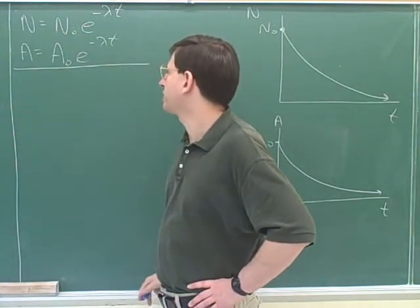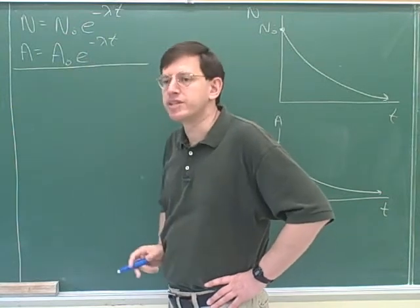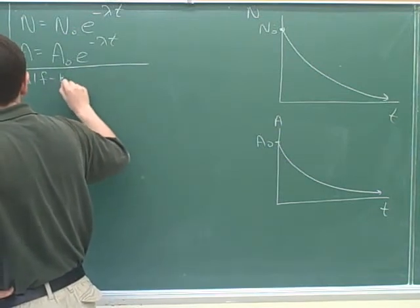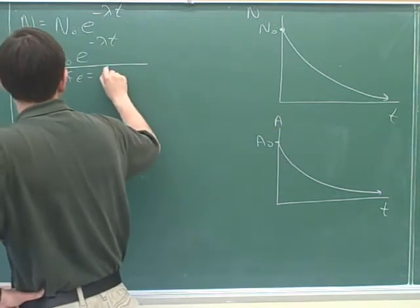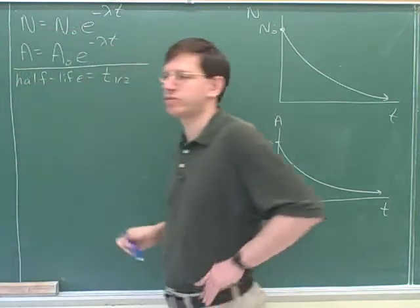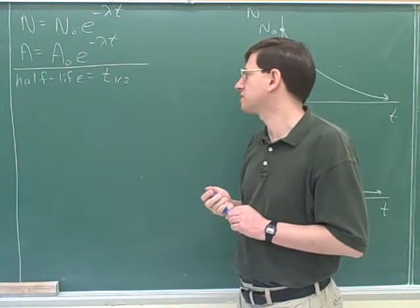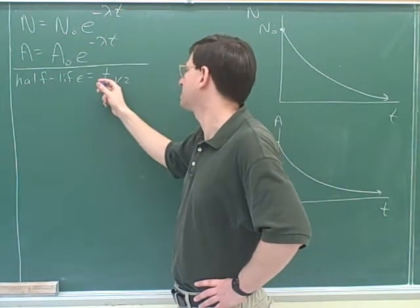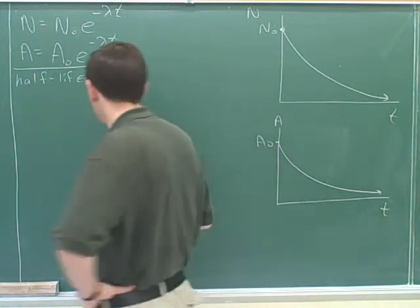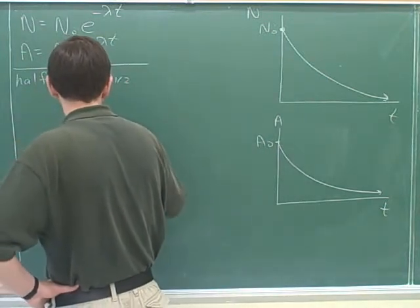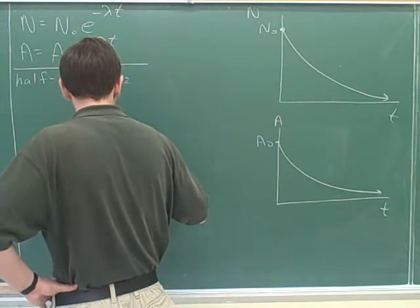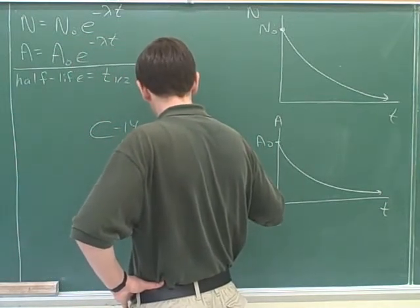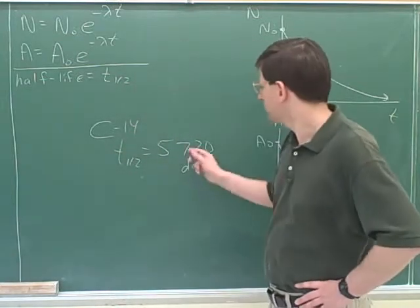Now sometimes when we're talking about how radioactive something is, we talk about its lambda. But sometimes instead we talk about its half-life. The symbol for half-life is T to the subscript one-half. This is just the symbol for half-life. So you don't want to confuse that with lowercase t. T is how much time is elapsed, but T to the one-half is the half-life. For example, carbon-14 has a half-life, if I remember right, of 5,730 days.